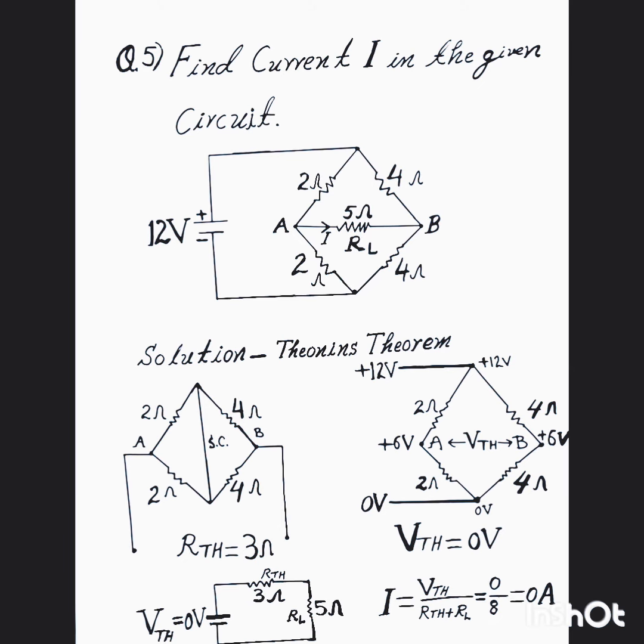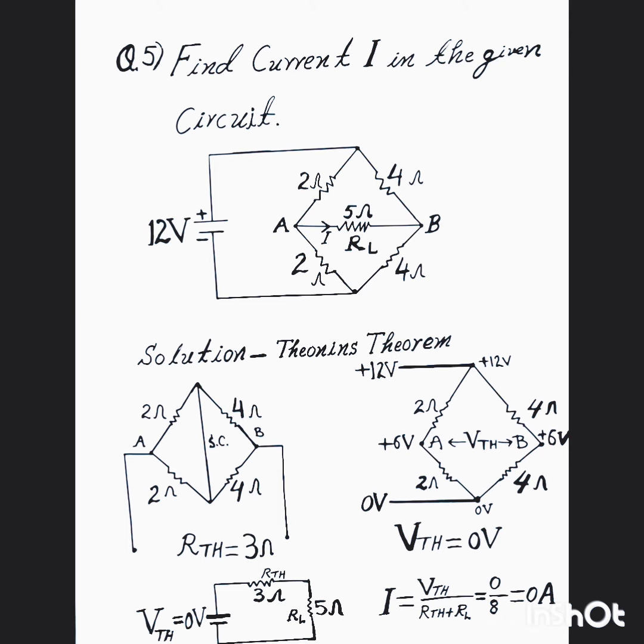By voltage divider network, voltage at point A and B both 6 volt, same voltage. So VTH equal to, or VAB equal to 0 volt. Then we will connect VTH with RTH in series, RL equal to 5 ohm.